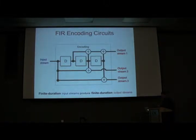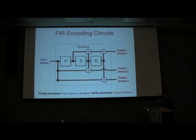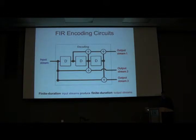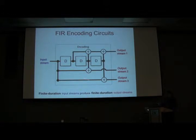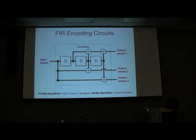A classical convolutional code is a circuit that takes an input stream of data to an output stream — they usually take one set of inputs to several sets of outputs. This particular circuit is a finite impulse response circuit. What this means is, if your input stream is of finite duration, then what comes out will also be of finite duration. These little dots are copying elements, and these D gates are delay gates. You apply a linear time-invariant filter to your input stream to generate the output stream.